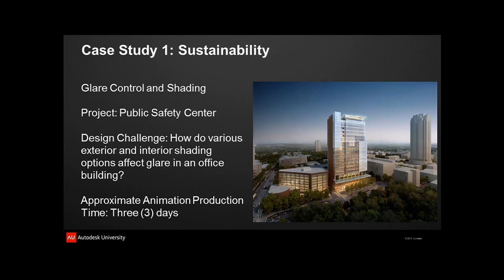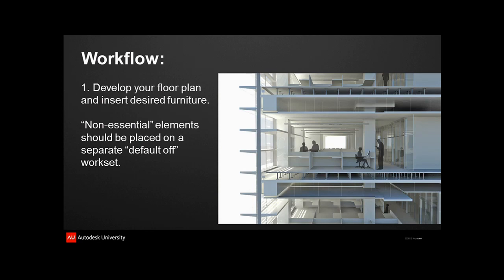We looked at the solar shades and asked: how far apart do we need to space them, how big do they need to be, what if we incorporated a light shelf, what if we changed them from white to black? We went through thousands of options, which would typically take a long time to do in section. So we decided to take the building from Revit into Max. What you're going to see took us about three days, and this project is about six years old, so the final product is a little grainy.